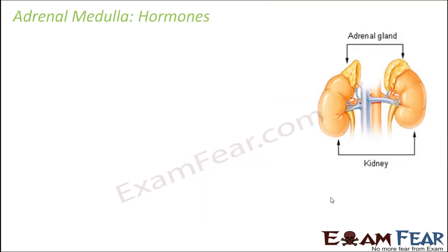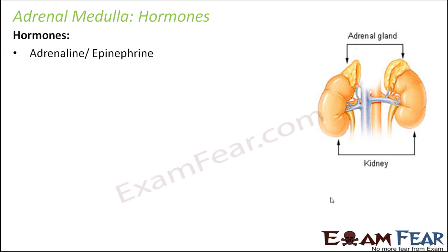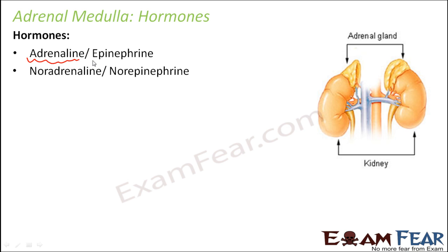Let us look at the hormones secreted by the adrenal gland. We will talk about the two parts separately. The hormones which the adrenal medulla secretes are adrenalin and noradrenalin. Adrenalin is also known as epinephrine, and noradrenalin is also known as norepinephrine. These two hormones are often together known as catecholamines.